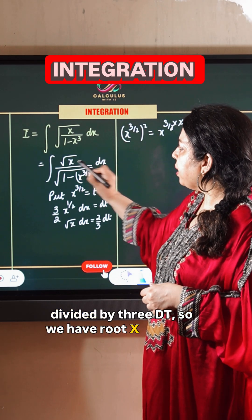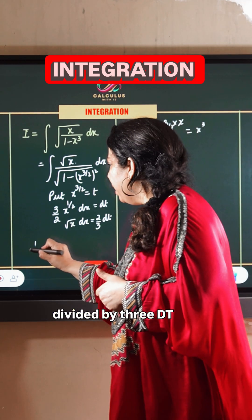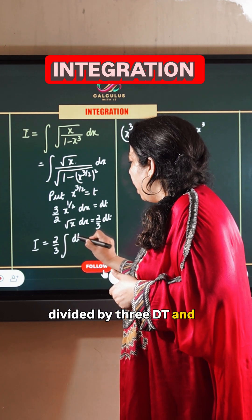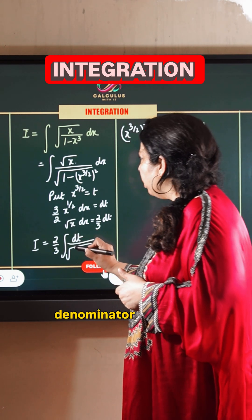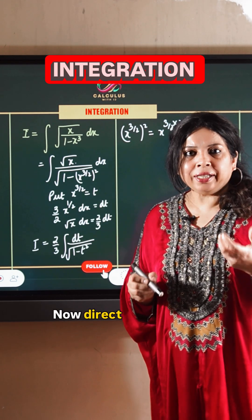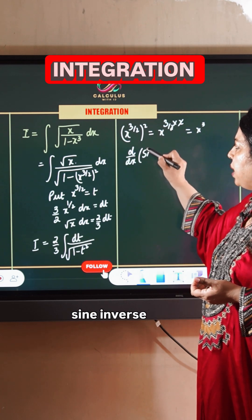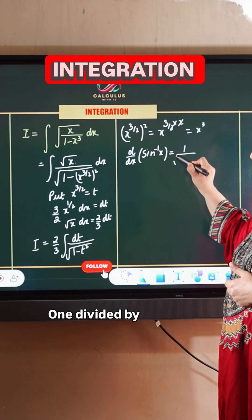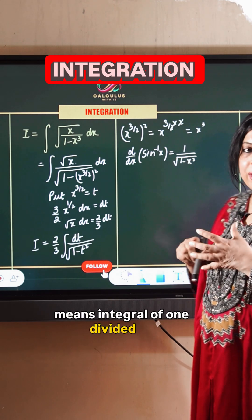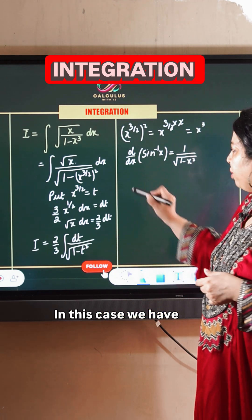So we have root x dx in the numerator which becomes 2 divided by 3 dt. The integral becomes 2 divided by 3 dt divided by root 1 minus t square. Now we know that the derivative of sin inverse x is 1 divided by root 1 minus x square, which means the integral of 1 divided by root 1 minus x square is equal to sin inverse x. In this case we have t.